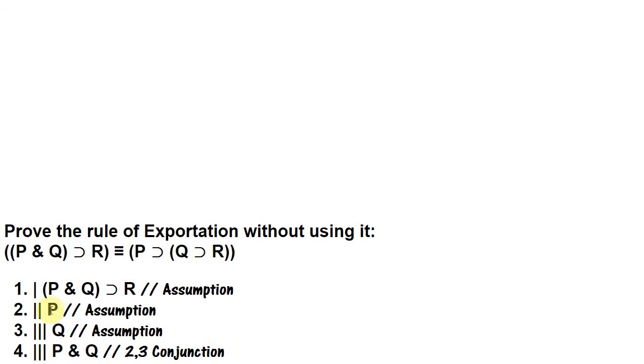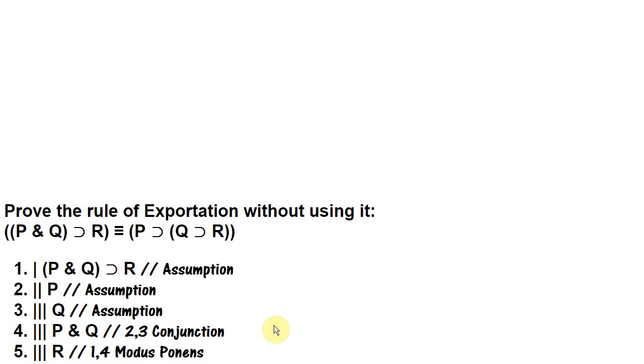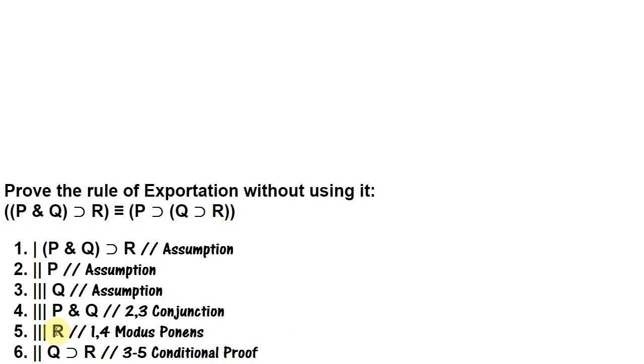Well, from lines two and three, we can use conjunction to get p and q. And then because we have p and q, then r, we can get r. And we get r through modus ponens. And now we can close off the innermost assumption, and we get if q, then r by conditional proof.